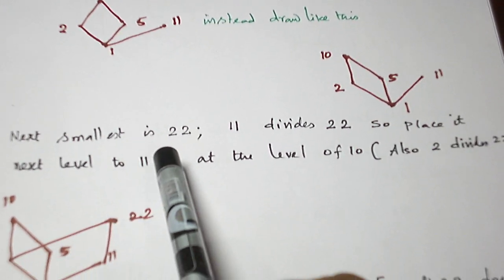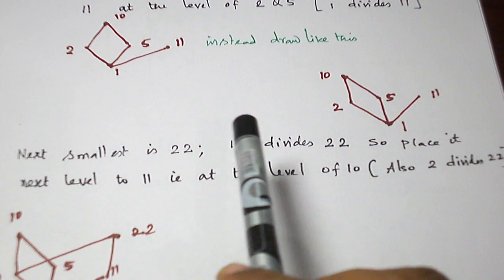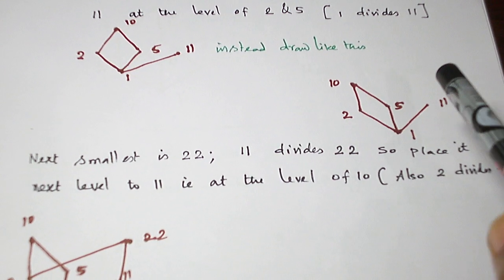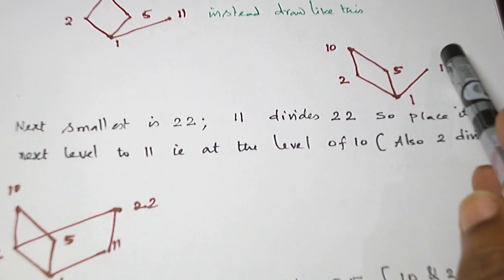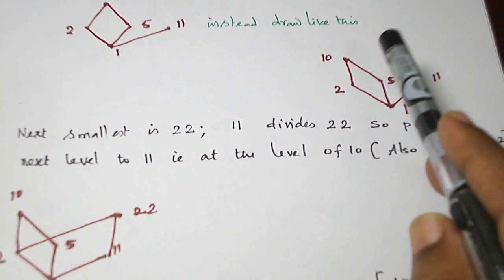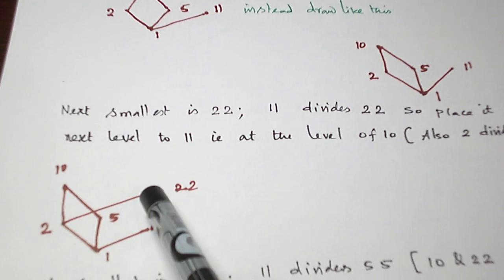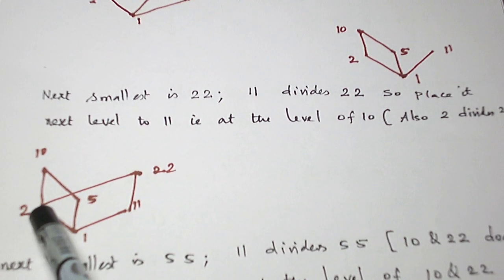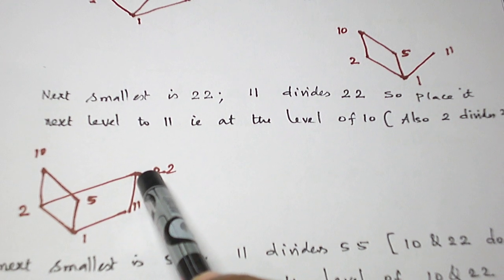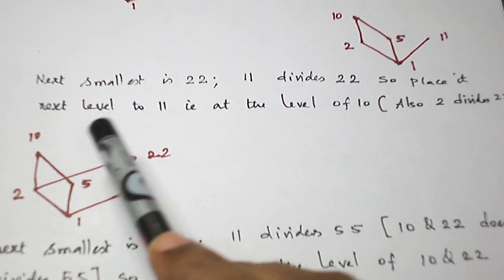Next smallest element is 22. 11 divides 22, so 22 should be placed in the next level of 11. So 11 divides 22 as well as 2 divides 22. So I can place like this. 22 and 10 are in the same level.